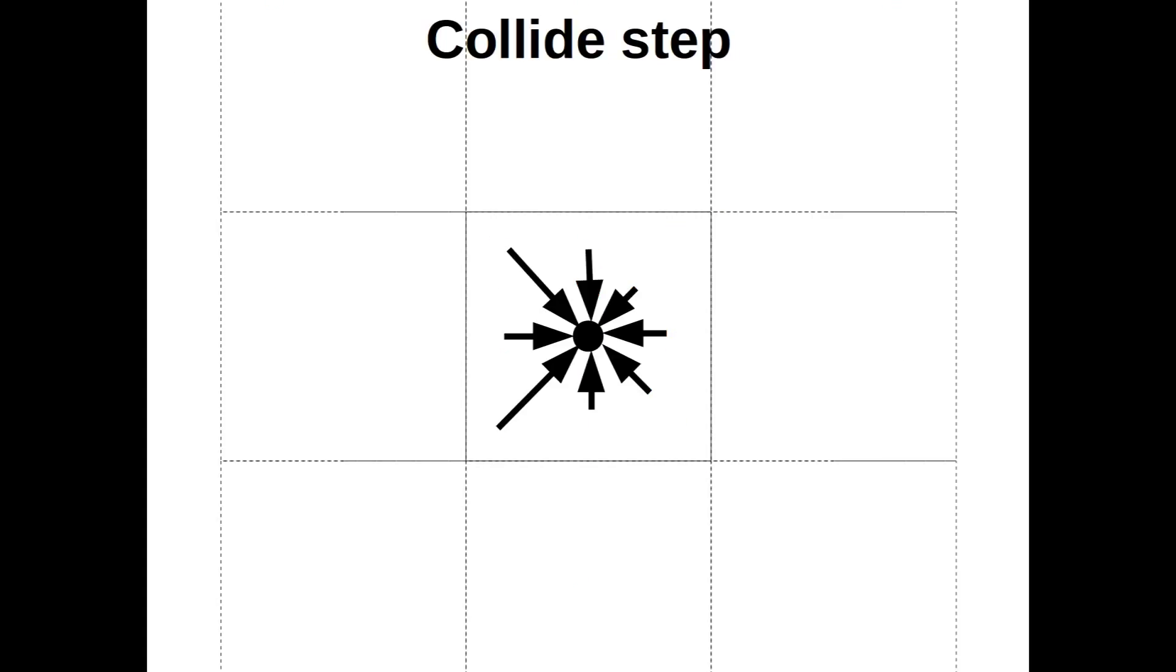We let the particles collide locally inside each grid cell and so redistribute our particle populations. Both mass and momentum need to be conserved during collision.